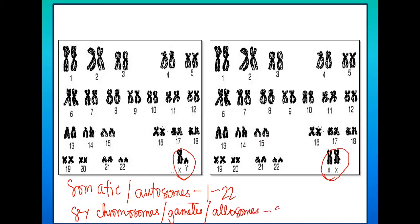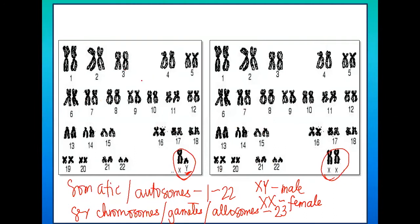From the illustration, the first picture differs from the second in terms of having a Y chromosome. An XY organism is known to be a male human, while the 23rd pair with XX chromosomes belongs to the female human organism. They differ only in the 23rd chromosome, but are similar in terms of their somatic or body chromosomes, which are arranged from tallest to shortest.